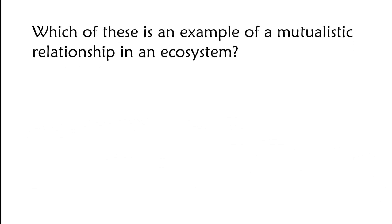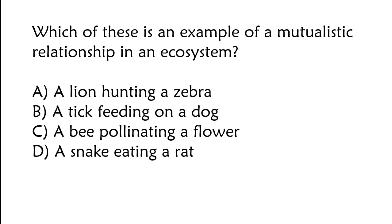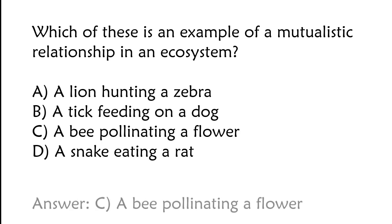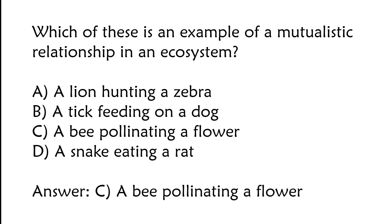Which of these is an example of a mutualistic relationship in an ecosystem? A) A lion hunting a zebra, B) a tick feeding on a dog, C) a bee pollinating a flower, D) a snake eating a rat. The correct answer is option C, a bee pollinating a flower.